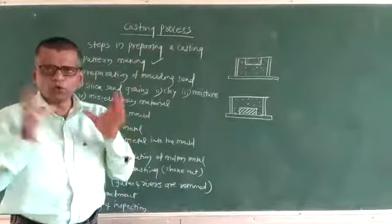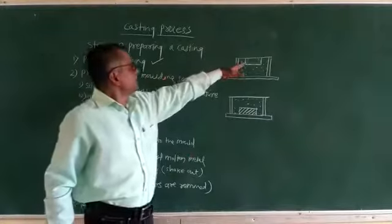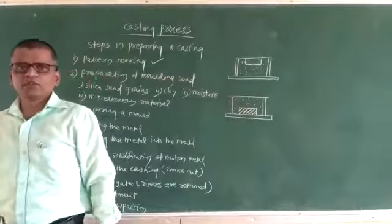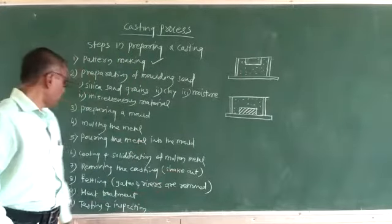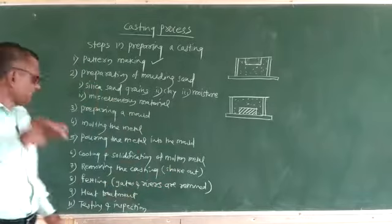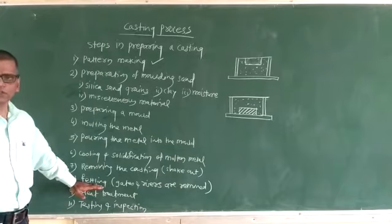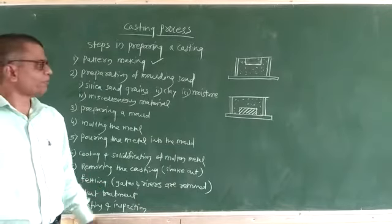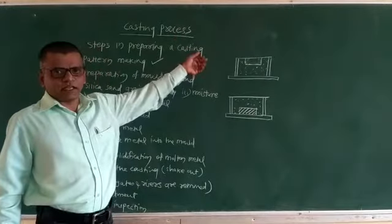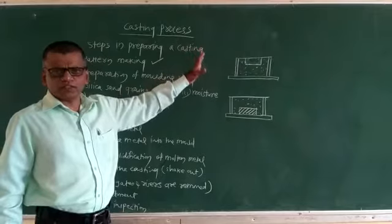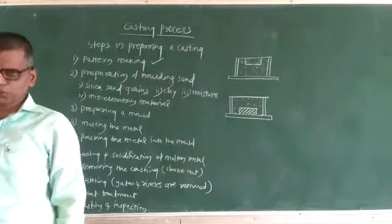The mold is broken and the solidified casting is taken out from that mold. Any sand that has adhered to the surface of the casting is removed or cleaned off. That operation is called the shake-out operation. The next step after removing the casting is the fettling operation.